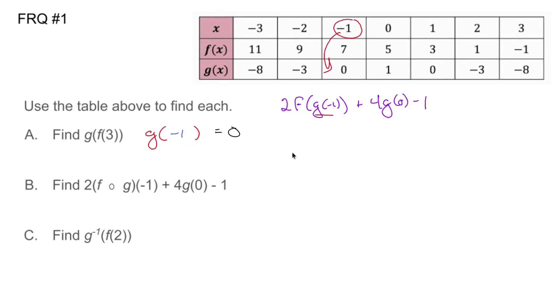Two times f of zero plus four times g of zero, which is different, minus one. So let's go to the zeros and find each one. Here's my zero. f of zero is five. Two times five.